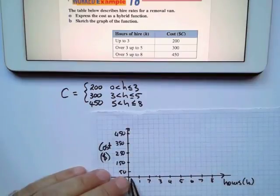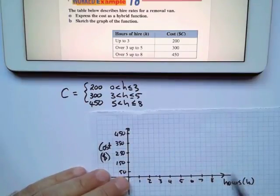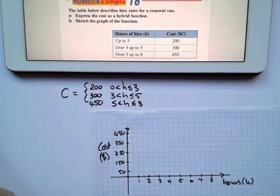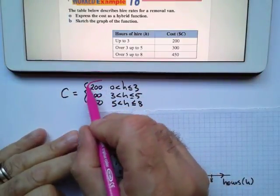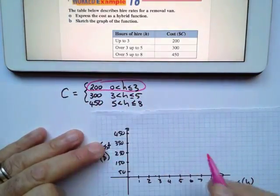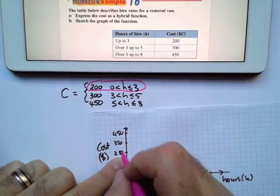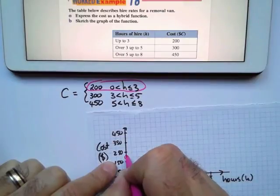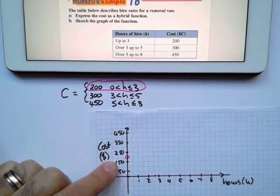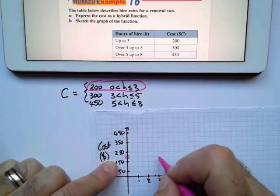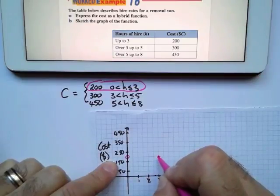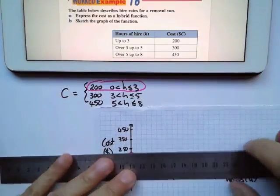Right, so from zero, including 3 hours, but zero is not included. So for this part, it's going to be $200, which is there. At zero, it's going to be excluded, so it's going to be a round circle. It's going to exclude all the way to 3, and 3 is included. So for all that time, it's going to be there.